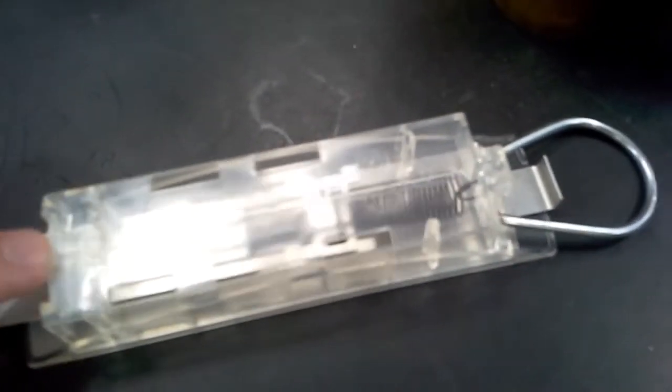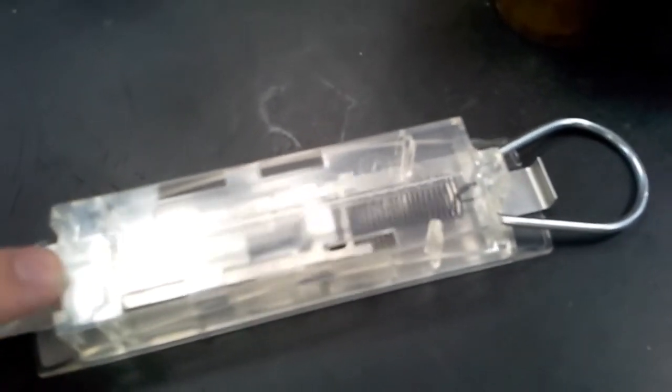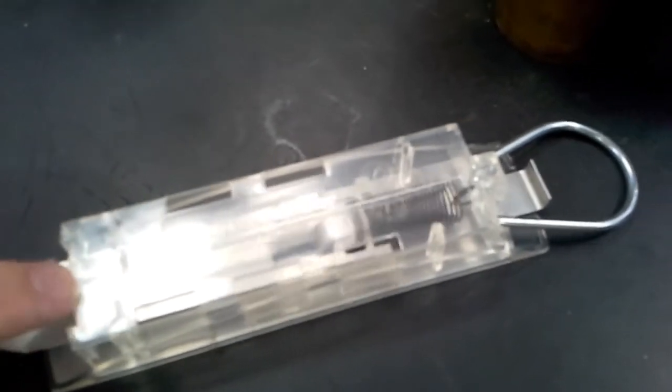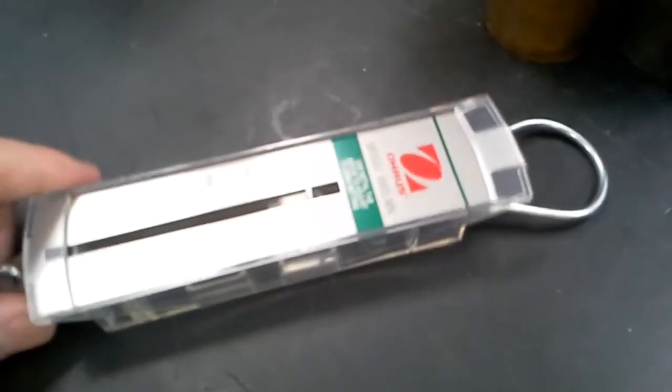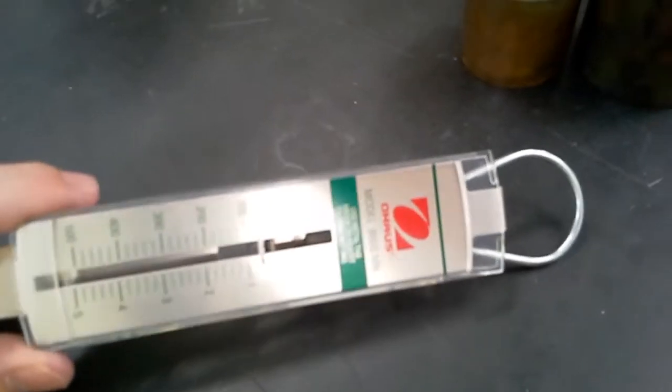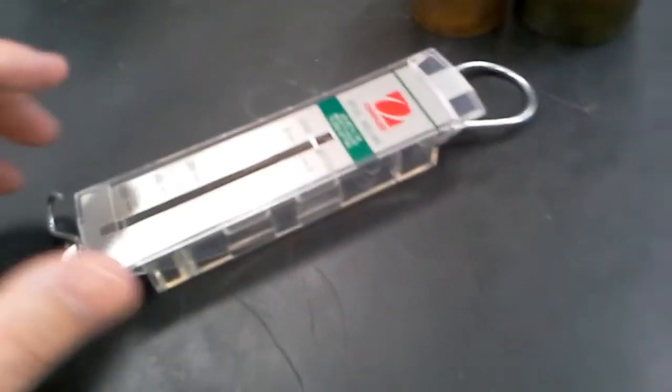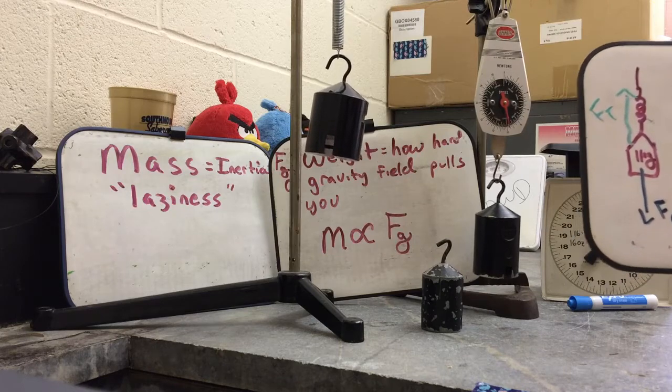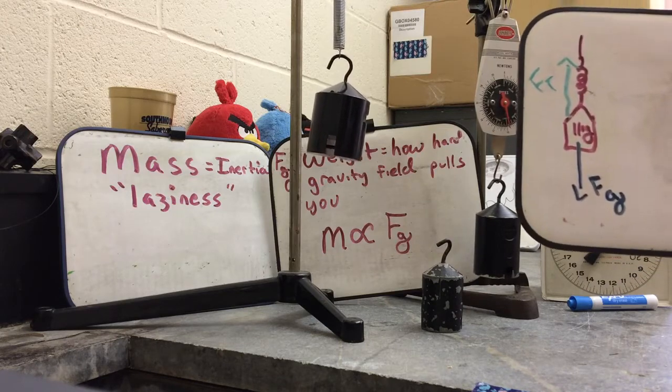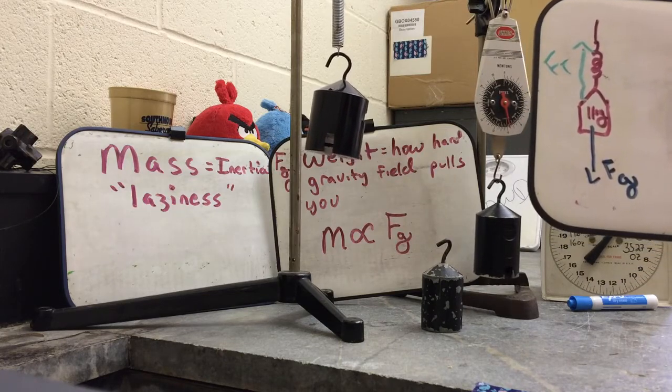This spring scale, there's literally a spring. And the more you pull on it, the more it pulls back on you. So, it's actually not measuring the weight. It's measuring how much the spring is stretched. And it actually is getting the tension in that spring. And that's the number you're seeing displayed on that scale.